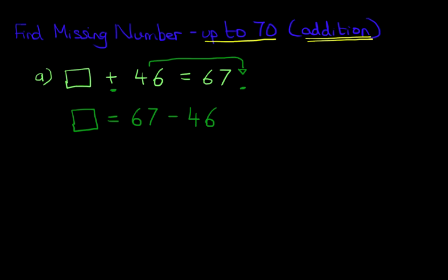Now the simple way to do this is, well let's just use the vertical format. We've got 67 minus 46. Now there's no carrying involved here, so we'll just go ahead and do the subtraction. 7 minus 6 is 1, and in the tens column, 6 minus 4 is 2. And that is our answer.